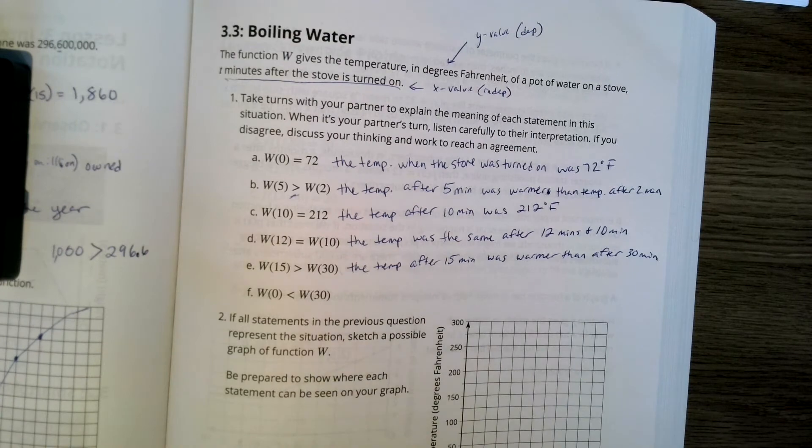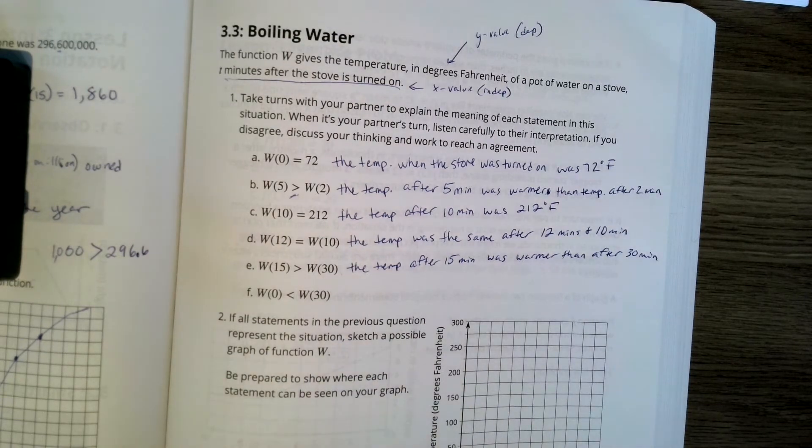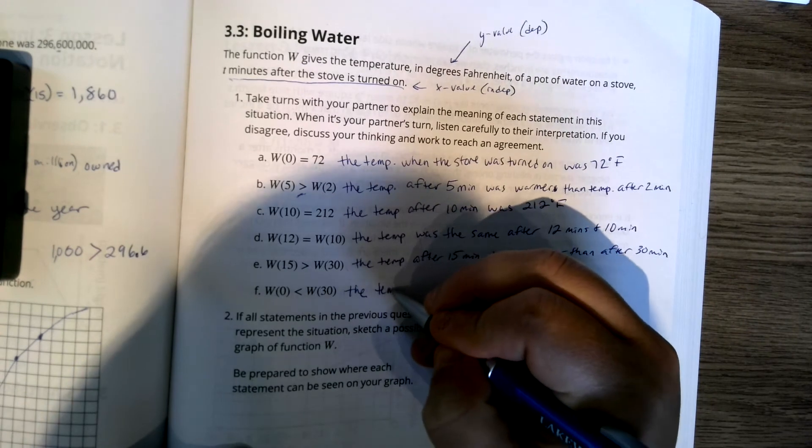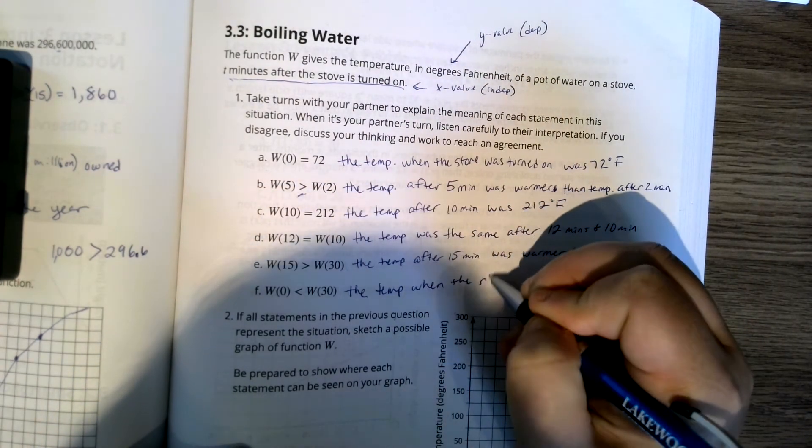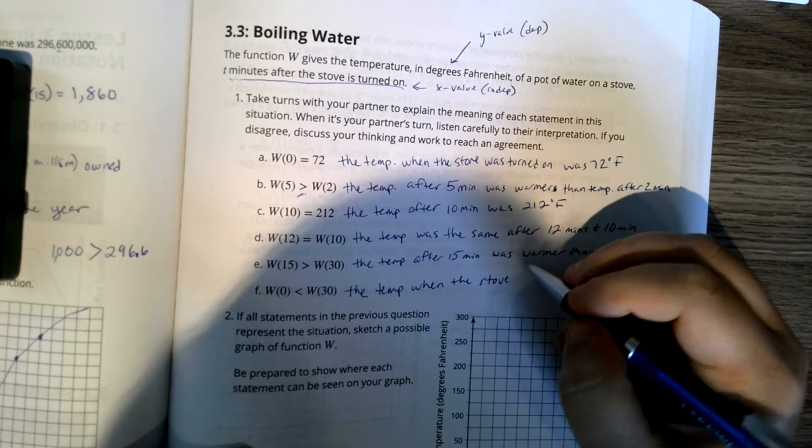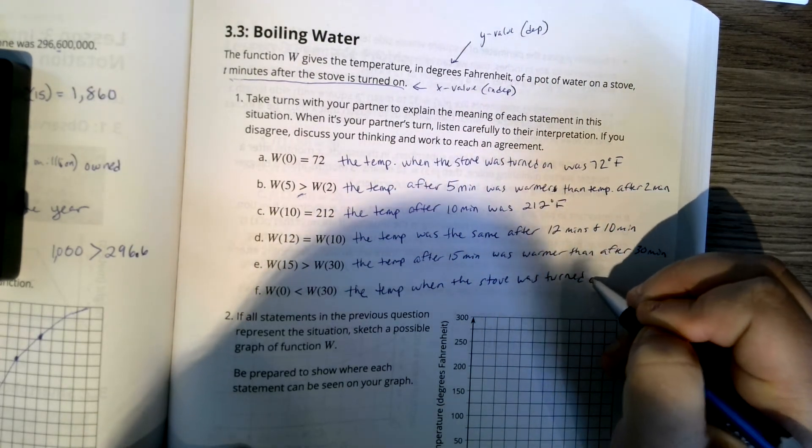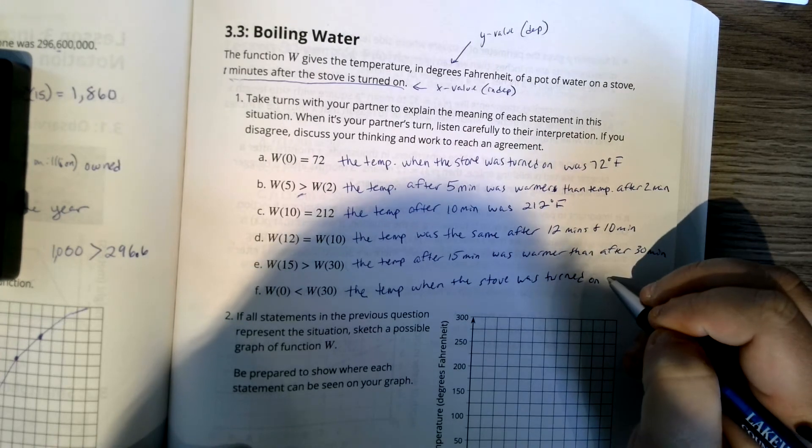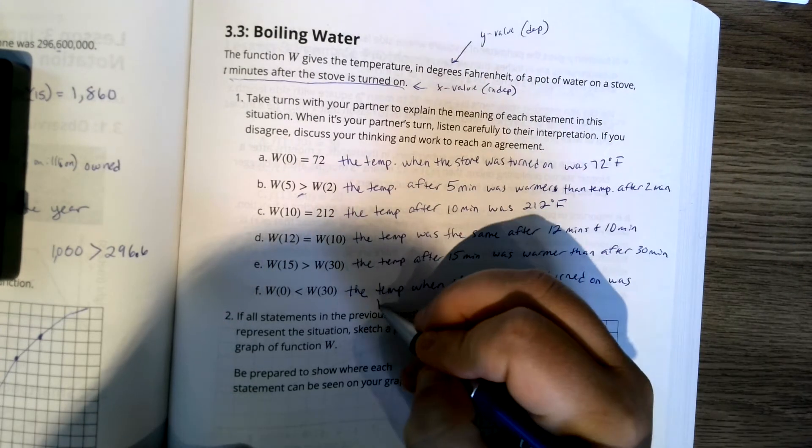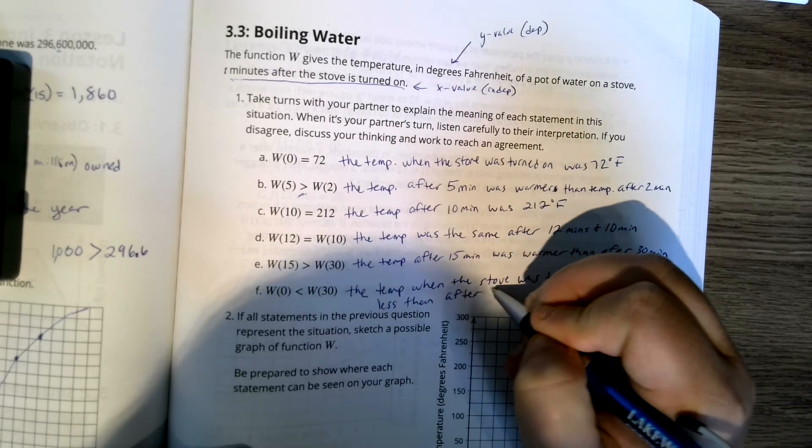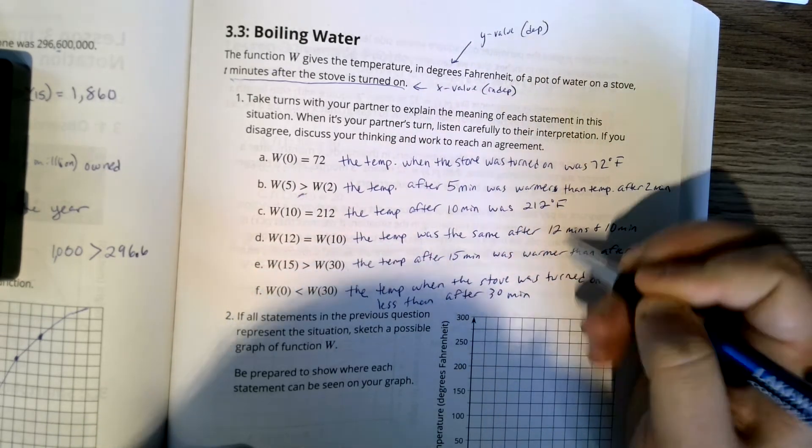And finally, W of 0 is less than W of 30. The temperature when the stove was turned on was less than after 30 minutes.